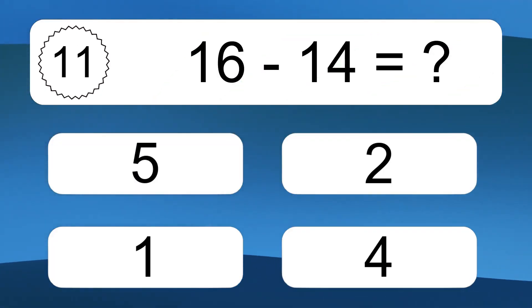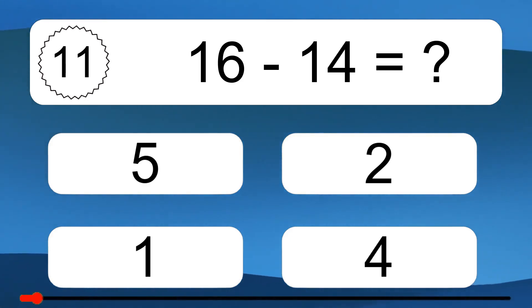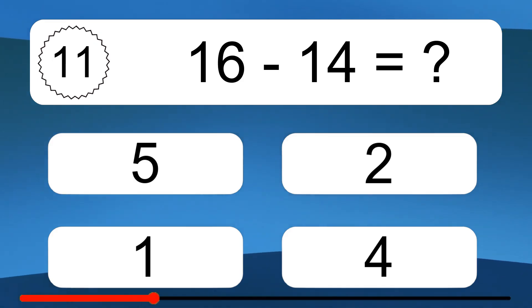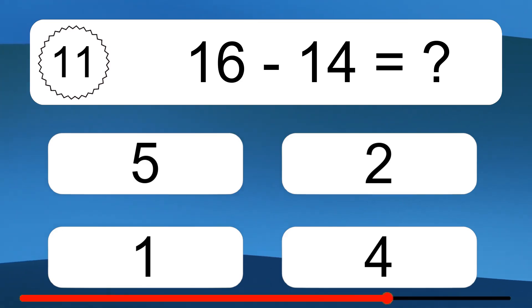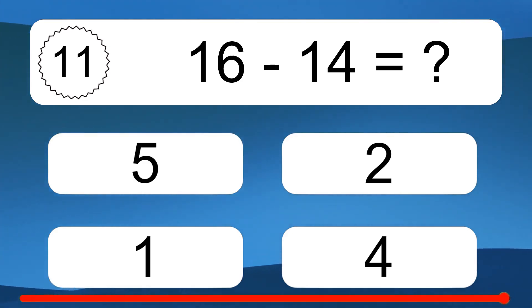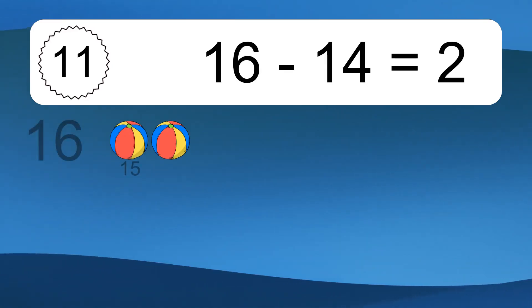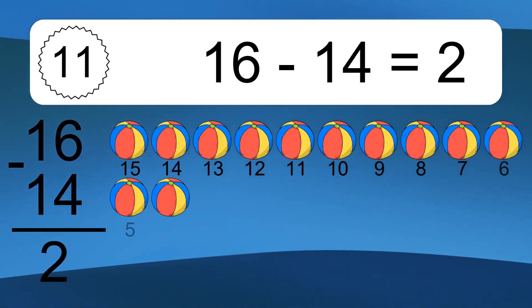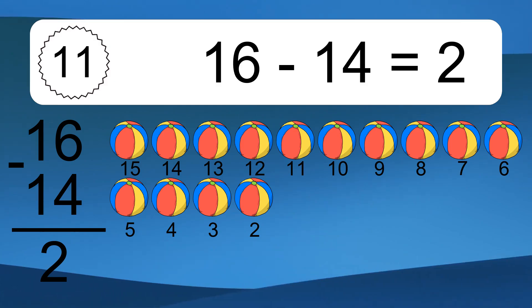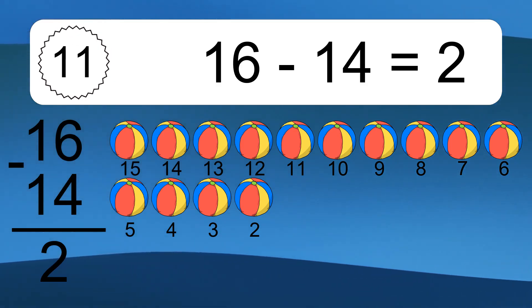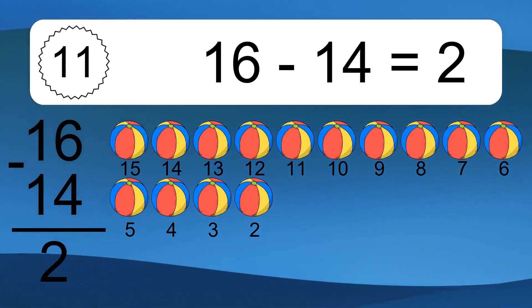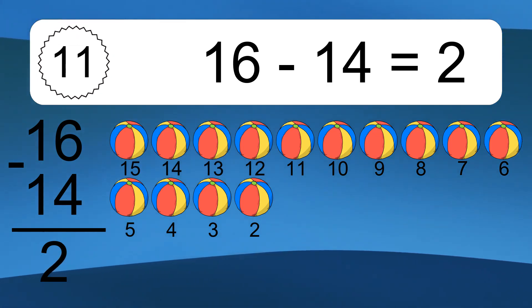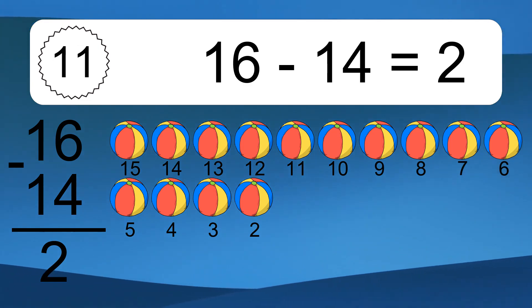16 minus 14 equals what? 16 minus 14 equals 2. Let's count it: 15, 14, 13, 12, 11, 10, 9, 8, 7, 6, 5, 4, 3, 2.